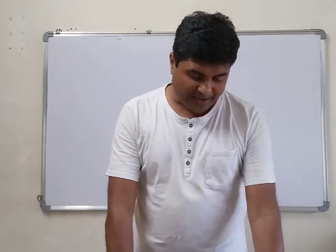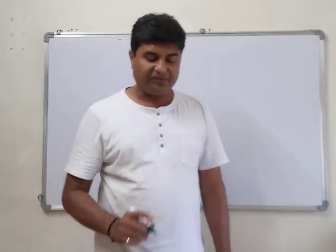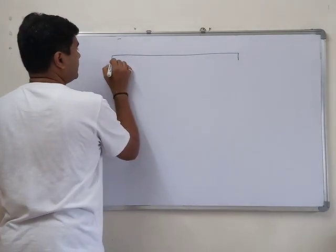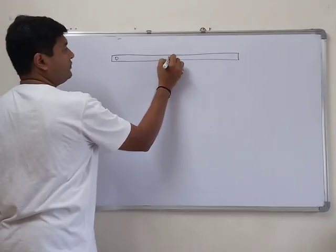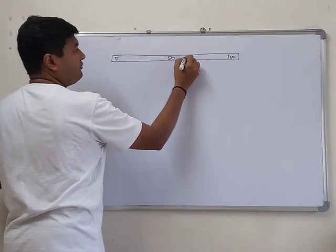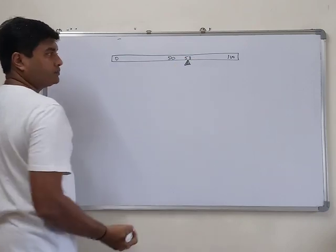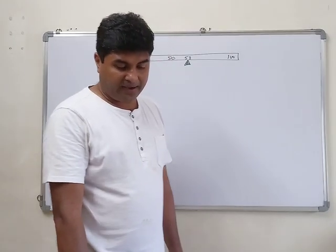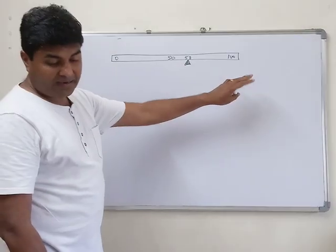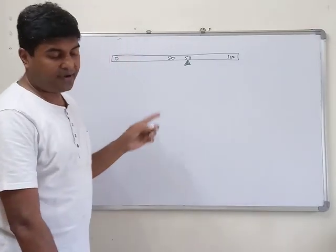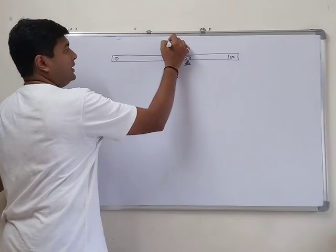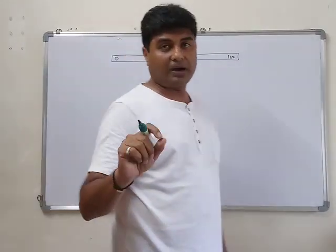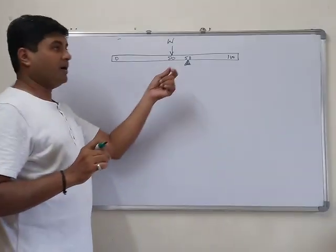Question 9: a uniform meter rule balances horizontally on a knife edge at the 58 centimeter mark. Draw the meter rule: 0, 50, 100, with the pivot at 58. When a weight of 20 gf is suspended from one end, it balances. The weight of the ruler W acts at the 50 centimeter mark.